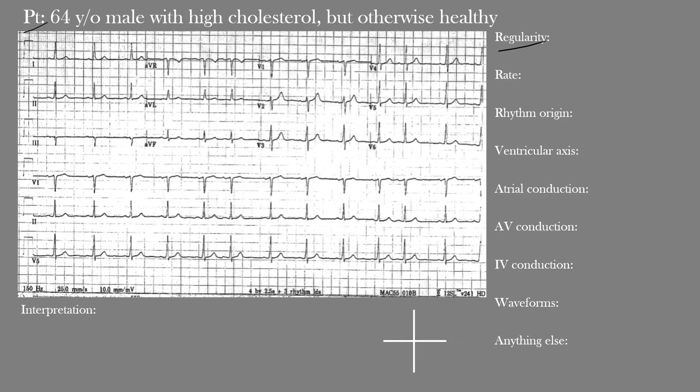Then we're going to look at the ventricular or QRS axis, which can help us in our differential diagnosis. Then we have atrial, atrioventricular, and intraventricular conduction — looking at whether each is prolonged or normal. Lastly, we'll look at waveforms: the waves, segments, and intervals. And finally, is there anything else we've missed? We'll take all this information and make a final interpretation of the EKG.